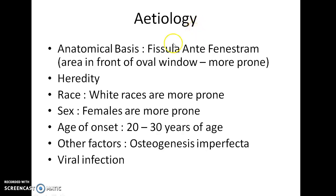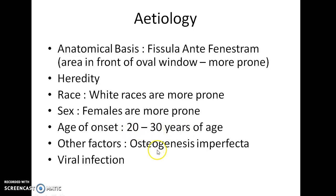Etiology of Otosclerosis: There is an anatomical basis — there is an area called Fissula ante fenestram, that is the area in front of the oval window, which is more prone for Otosclerosis. Otosclerosis can be hereditary. Race also plays a major role, as white races are more prone. Females are more prone, and Otosclerosis starts between 20 to 30 years of age. Other factors like Osteogenesis imperfecta also play a role. Viral infection can also lead to Otosclerosis.